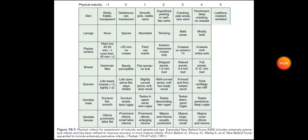For skin: negative one point is sticky, friable, and transparent. Zero points is gelatinous, red, and translucent. One point is smooth and pink with visible veins. Two points is superficial peeling or rash with few veins. Three points is cracking with pale areas and rare veins. Four points is parchment with deep cracking and no vessels. Five points is leathery, cracked, and wrinkled.